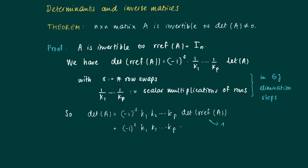So the determinant of A is (-1)^S times these things that we use to multiply the rows.